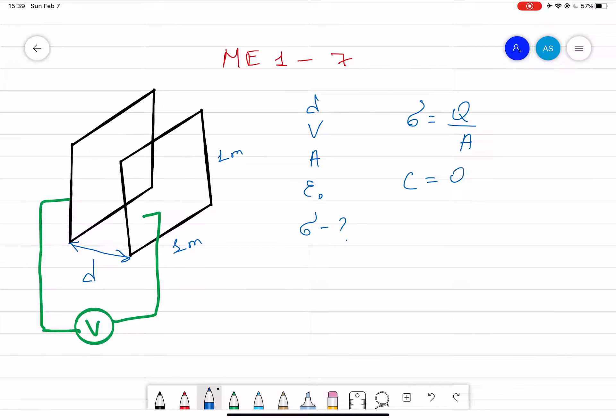Then we also have formulas for the capacitor. C is equal to Q over V, or is equal also epsilon naught times area divided by d.